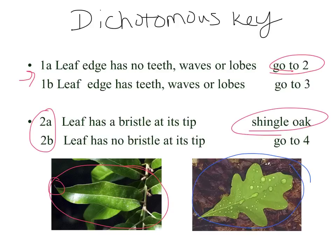Now classifying the second leaf, I start again at number one. 'Has a leaf edge with no teeth, waves, or lobes' versus 'has teeth, waves, or lobes.' This one has waves, so I would go to number three. What most people forget about the dichotomous key is that we always have to start at the very beginning.